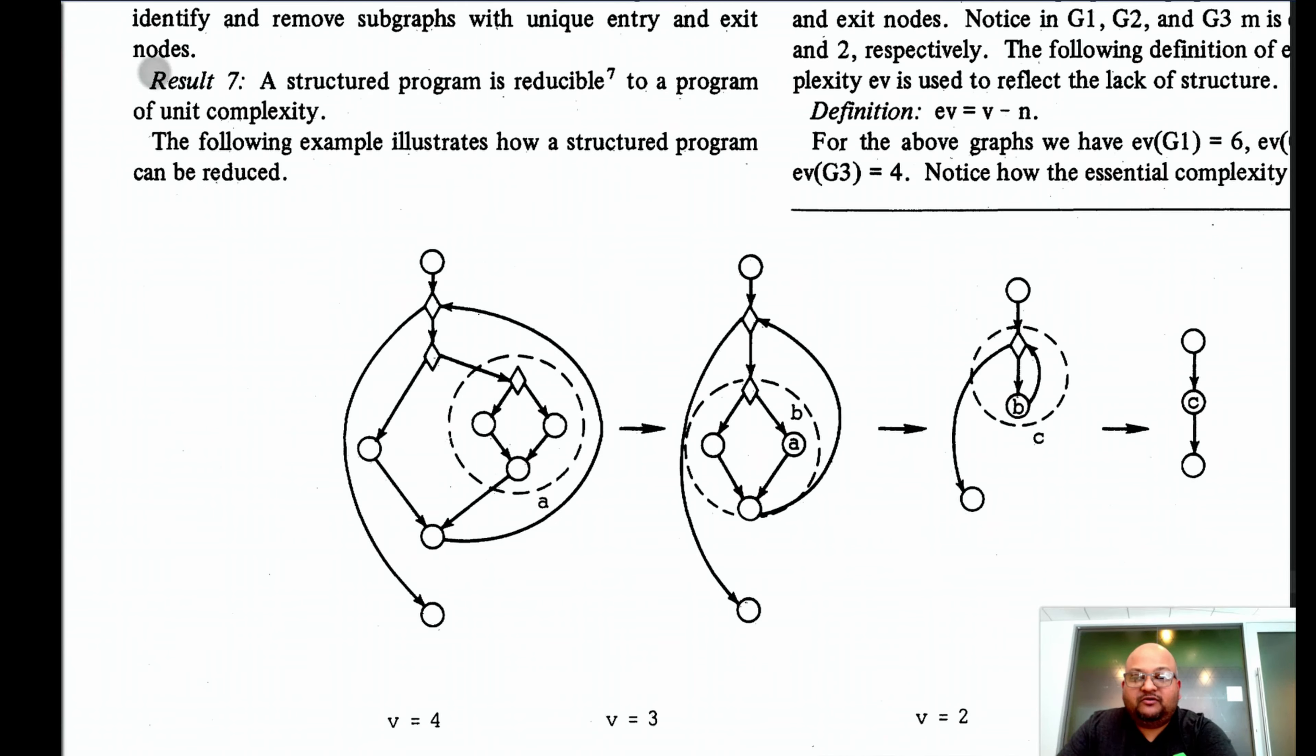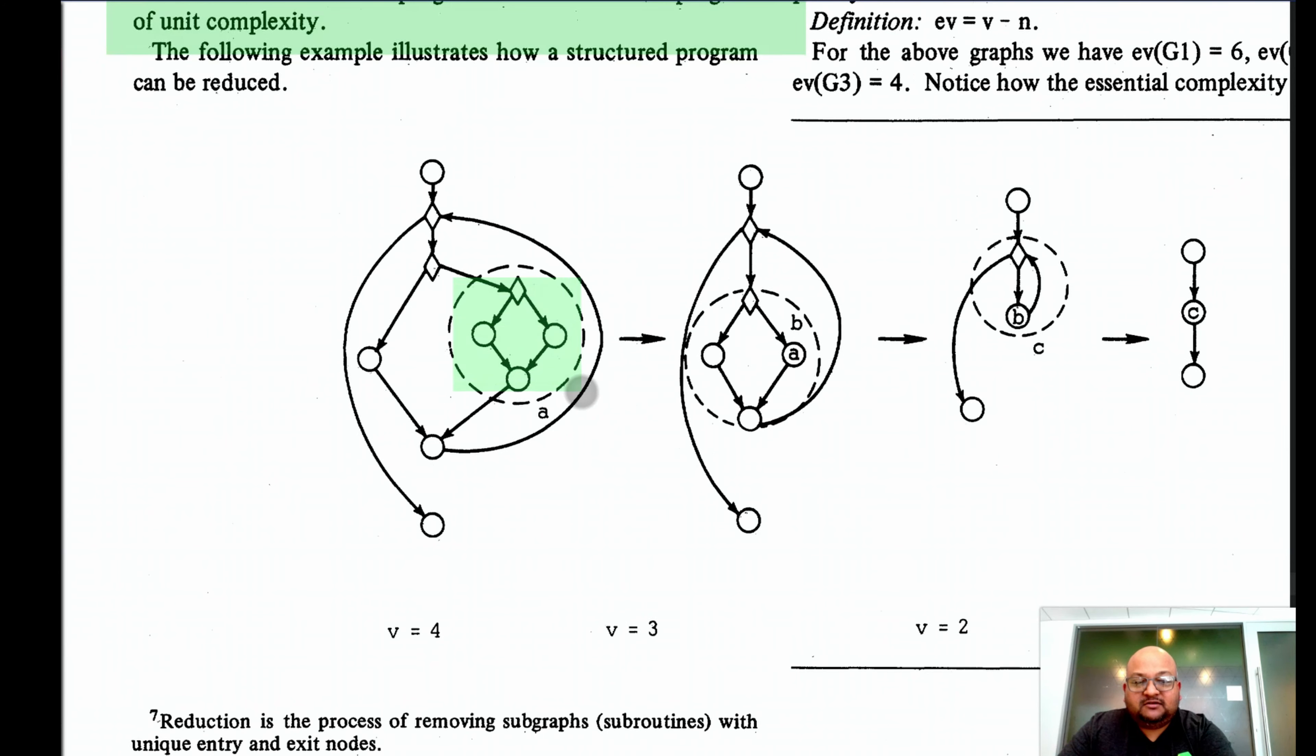We can also prove that a structured program is reducible to one that has complexity of exactly one. What is the definition of reducibility? If we take subgraphs within a graph that have only one entry and exit node and remove it and replace it by a single node, we can say that the second graph is a reduction of the first one. In other words, reduction is the process of removing subgraphs with unique entry and exit nodes. And in this example, you can see how a structured program can be reduced step-by-step into a linear program, which has a cyclomatic complexity of one.